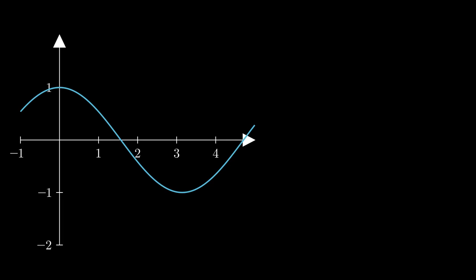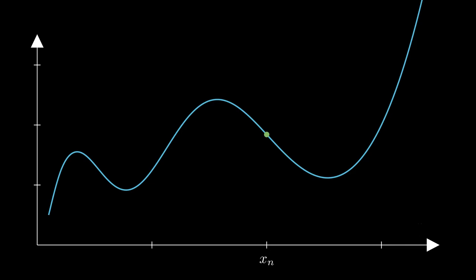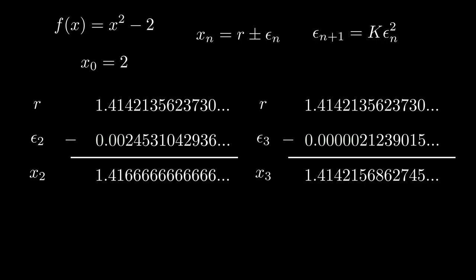Now, there are some situations in which this method might fail. Like, obviously having a denominator, f prime xn, being equal to 0, breaks the method. It doesn't return a next number. And there are many other reasons for why it might not work, but you can find those elsewhere online.